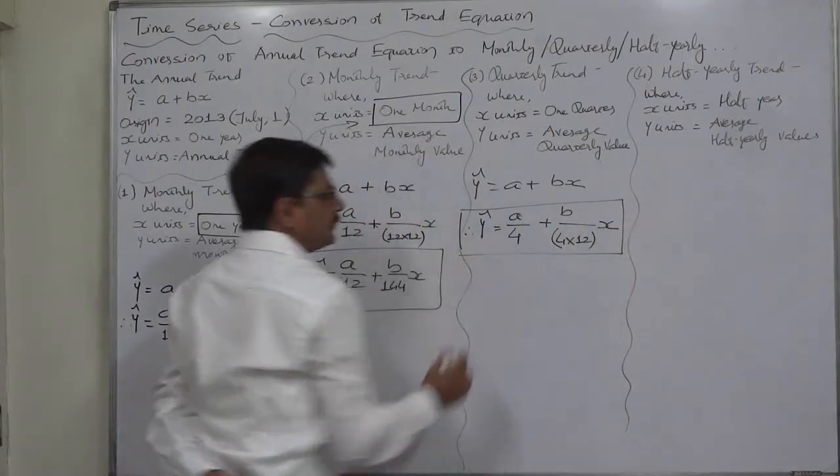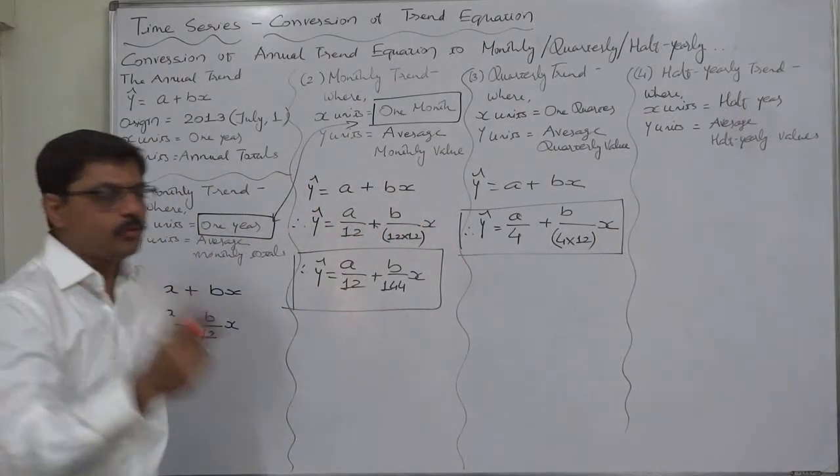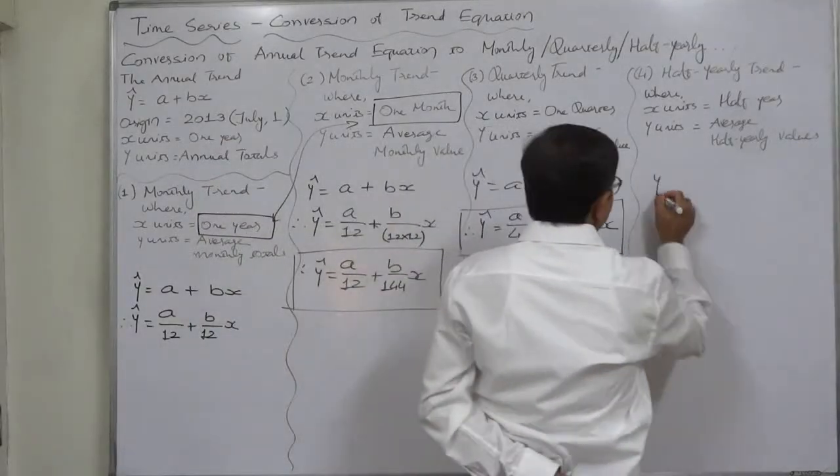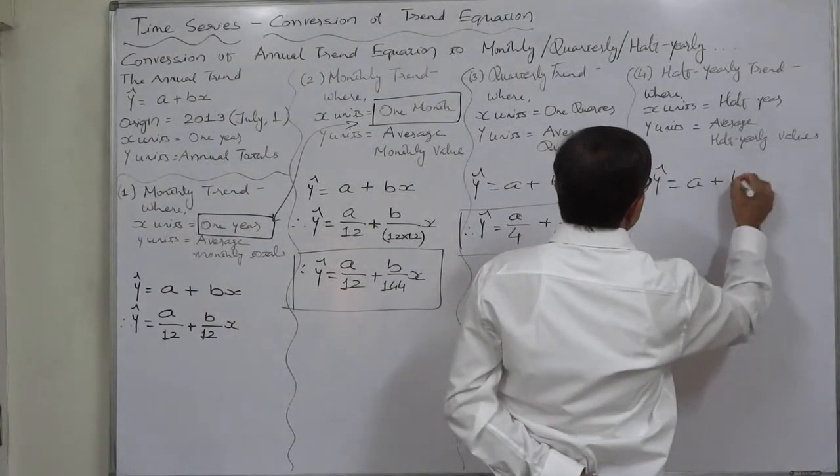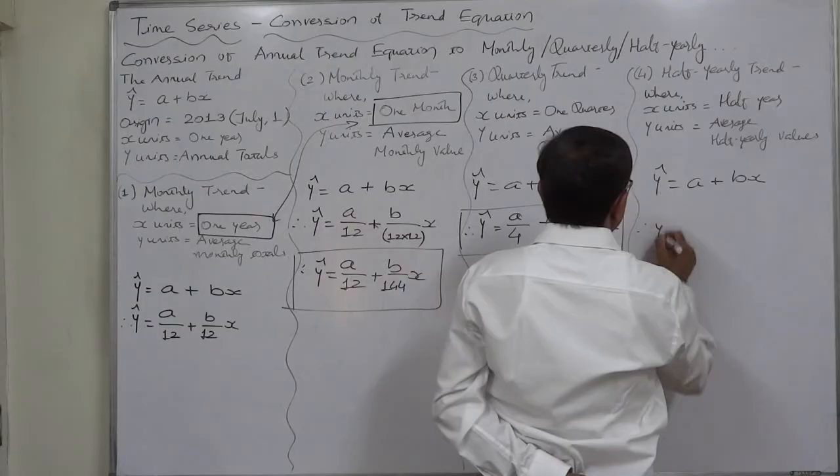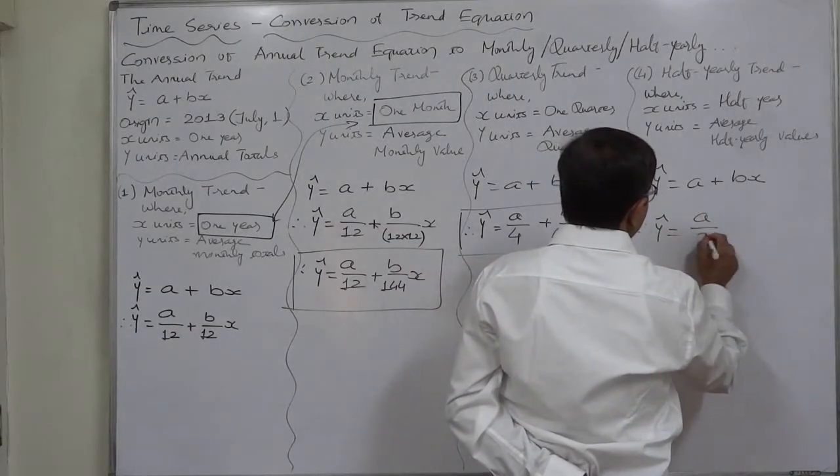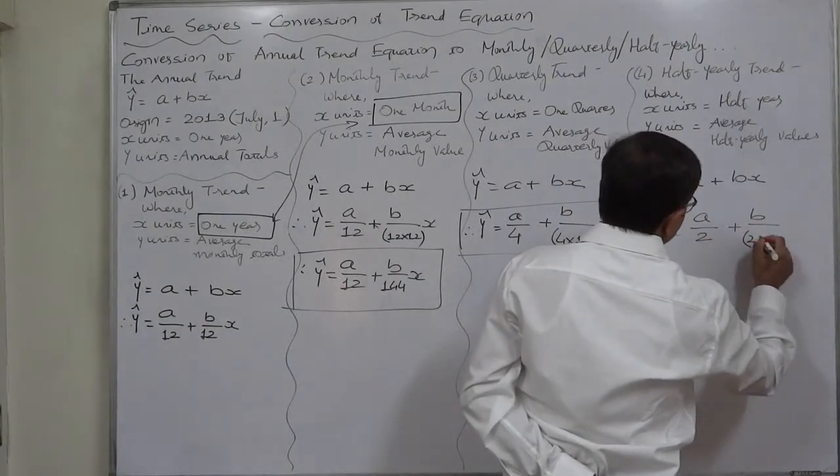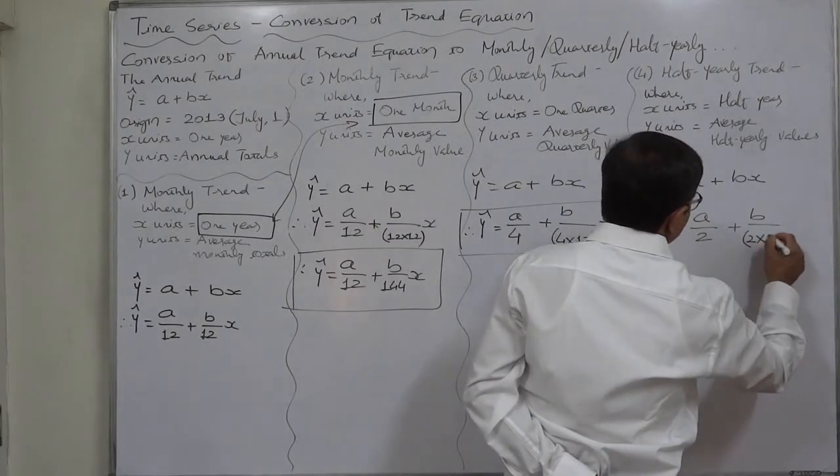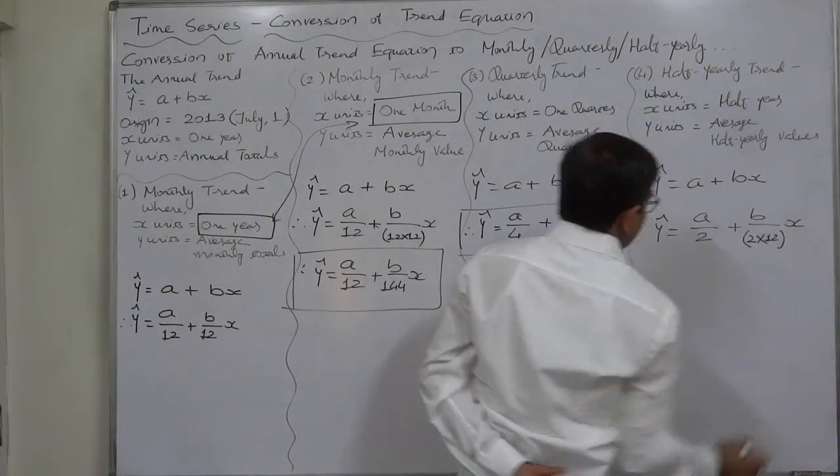And in the same way, a year is made up of two halves. Yearly trend is a plus bx, so the half-yearly trend must be a divided by 2 plus b divided by 2 into 12 times x.